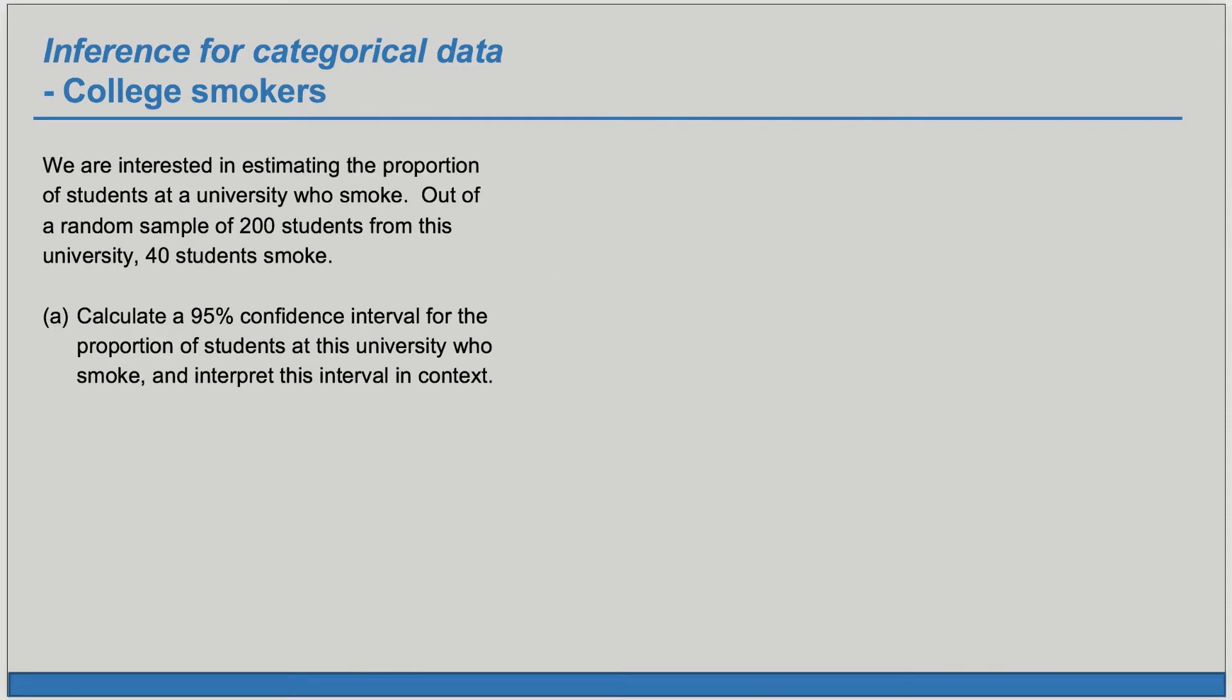We're interested in estimating the proportion of students at a university who smoke. Out of a random sample of 200 students from this university, 40 students smoke. Calculate a 95% confidence interval for the proportion of students at this university who smoke and interpret this interval in context.